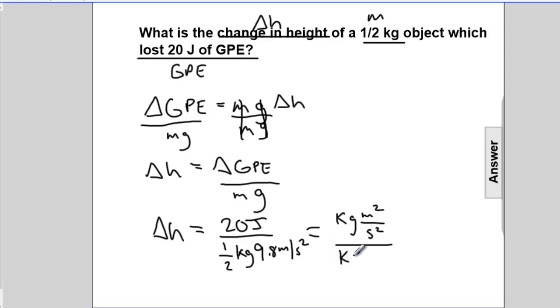and divided by acceleration, which is meters per second squared. We have some nice cancellation: kilograms cancels kilograms, seconds squared cancels seconds squared. One meter cancels from the numerator and denominator, leaving only meters. It works out dimensionally.